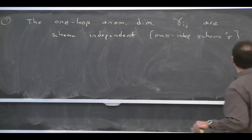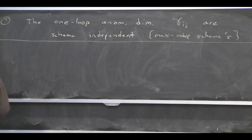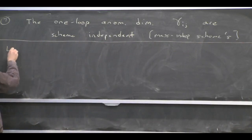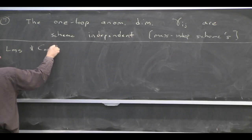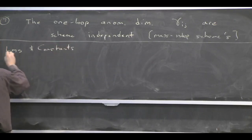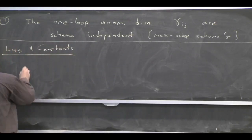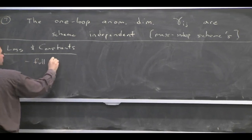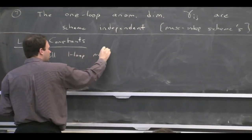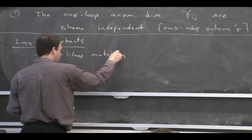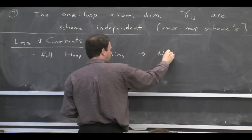Let's go back now and establish the notation where we actually just put the constants back in. I'm not going to write numbers — I'll just give them names and we'll track what happens to them. So let's think about the full one-loop matching and how we get the next-leading-log result.